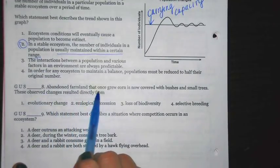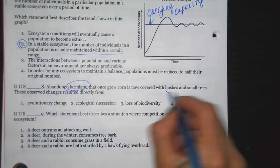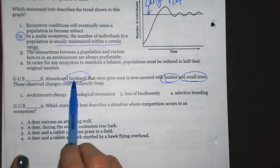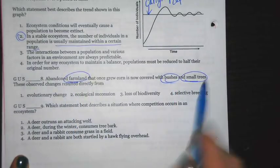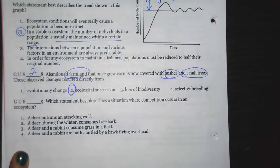Abandoned farmland that once grew corn is now covered in bushes. So, went from farmland to bushes and small trees. These observed changes resulted directly from ecological succession. Remember, each environment makes it more suitable for the next type of organism to live there.